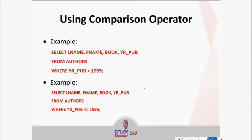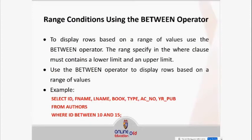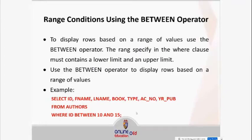To display rows based on a range of values, use the BETWEEN operator. The range specified in the WHERE clause must contain a lower limit and an upper limit. For example: SELECT id, fname, lastname FROM authors WHERE id BETWEEN 10 AND 15.